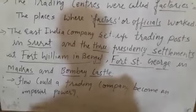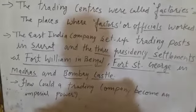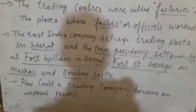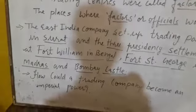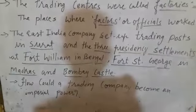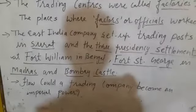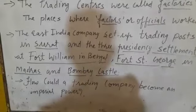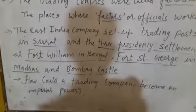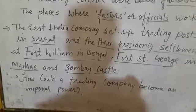Slowly the Indian princes became the puppets in the hands of the English. Puppets means a person or wooden doll that is controlled by somebody else, meaning the kings became the puppets in the hands of Britishers — just like in a puppet show.